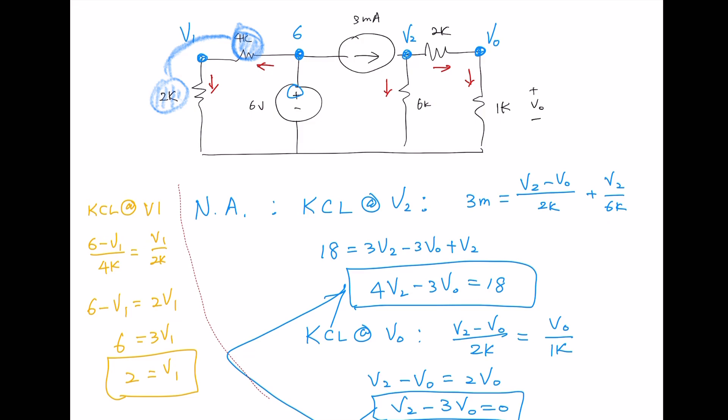I mean that makes sense. If we combine this 4K and 2K together, it's going to be 6K and that 6K is parallel with this voltage source.